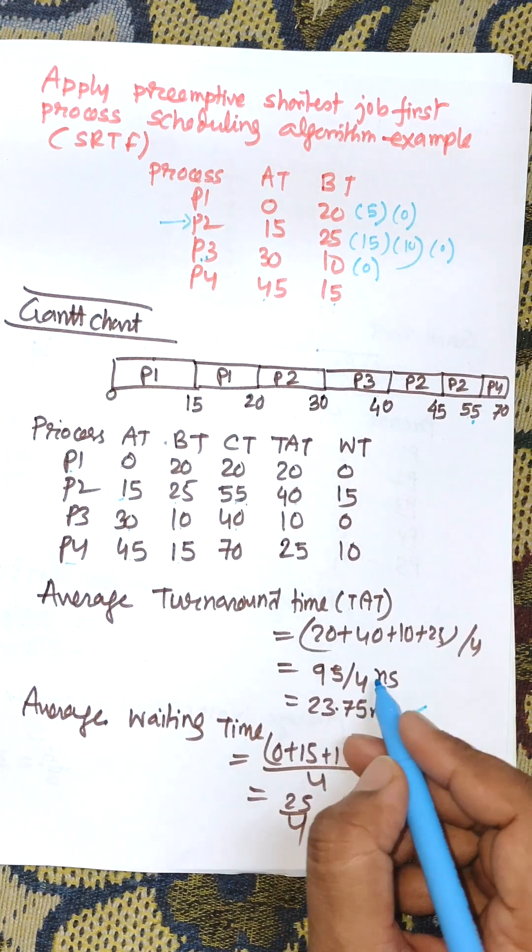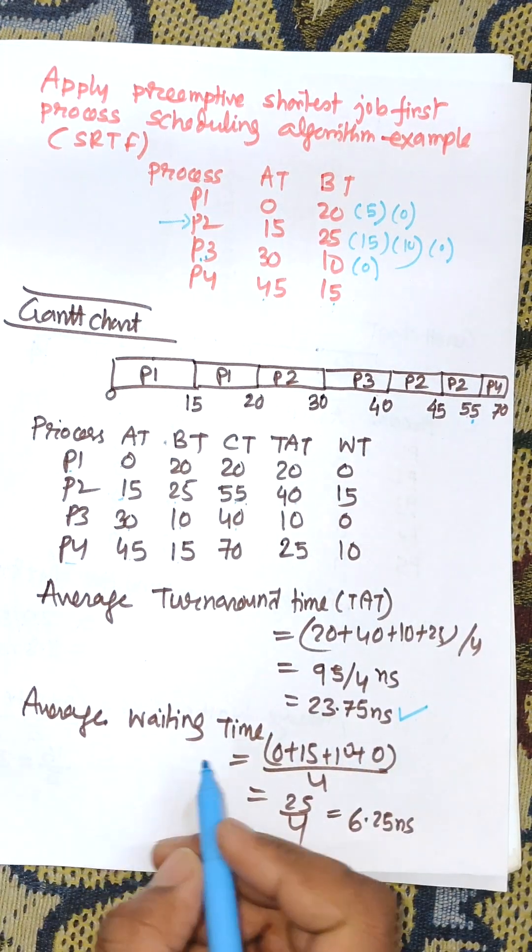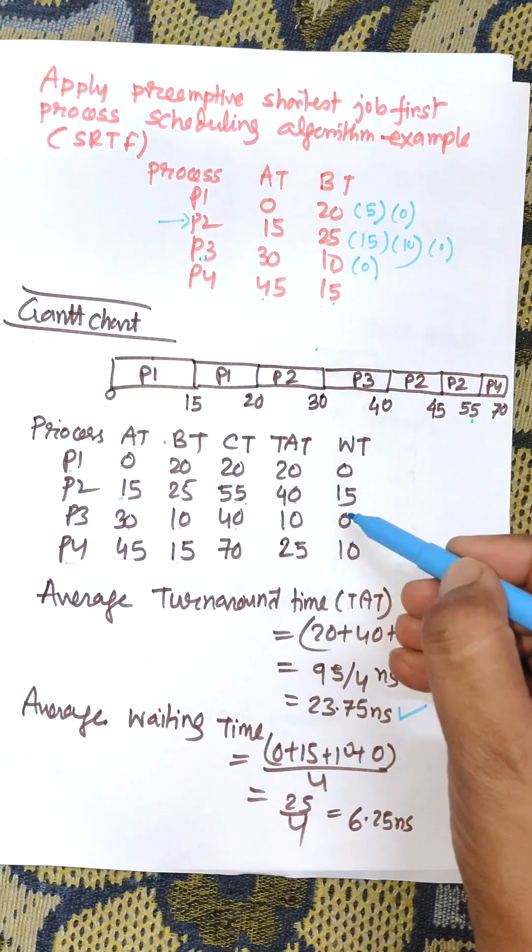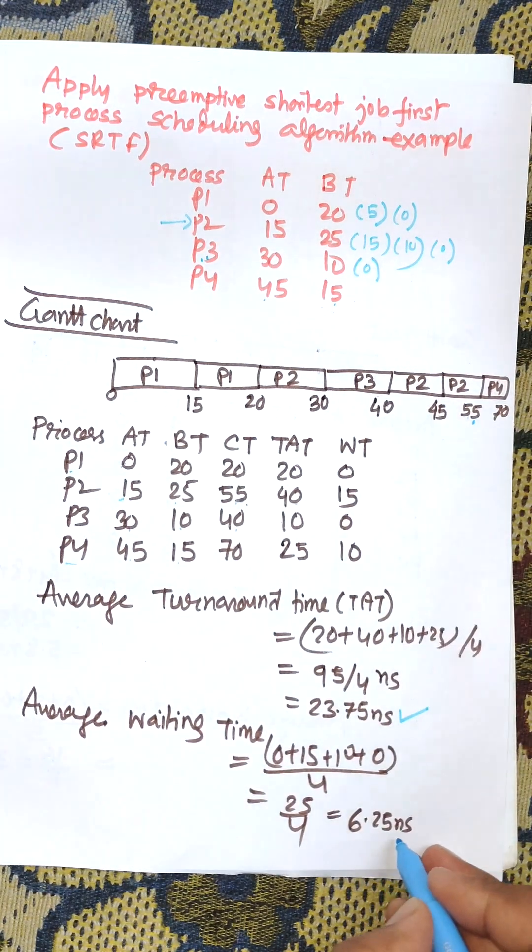No unit is given, so we can consider any unit - it can be nanoseconds or milliseconds. Average waiting time is 0 plus 15 plus 0 plus 10 divided by 4, which equals 6.25.